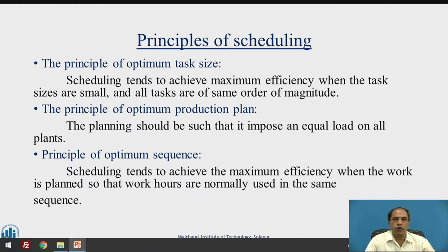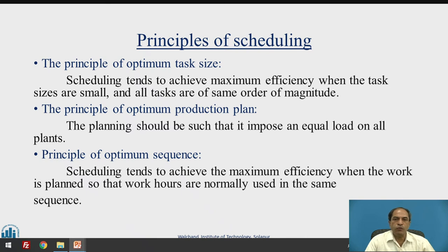There are some principles of scheduling. The first is the principle of optimum task size, which tends to achieve maximum efficiency when task sizes are small and all tasks are of the same order of magnitude. The principle of optimum production plan imposes an equal load on all plants. The principle of optimum sequence tends to achieve maximum efficiency when work hours are normally used in the same sequence. Organizations depending upon their priority will use one of these principles for scheduling.